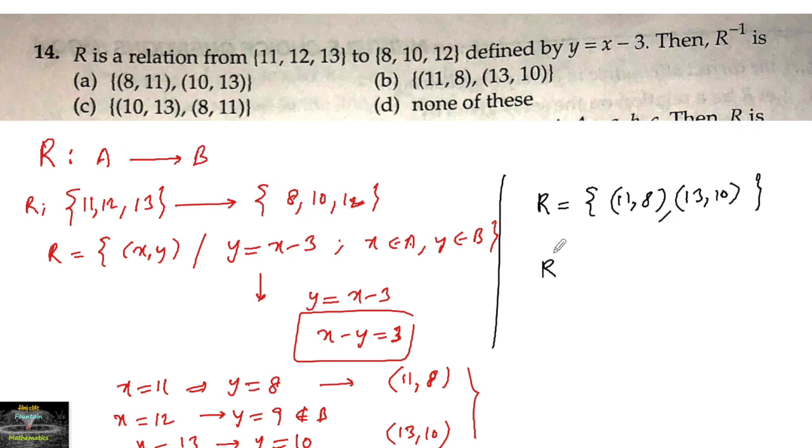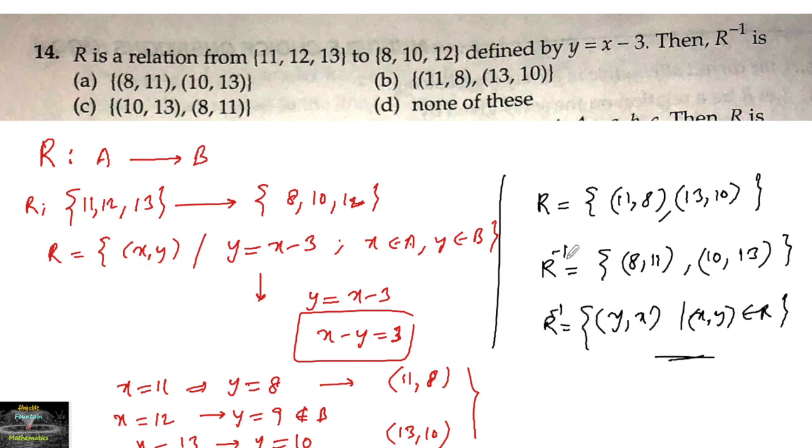But in our question it is asked about R inverse. So R inverse equals {(8, 11), (10, 13)}. R inverse is nothing but (y, x) such that (x, y) belongs to R. For every ordered pair (x, y) we take (y, x), that is R inverse. So we can go with option C. Option C is the right answer.